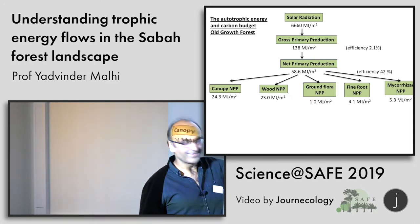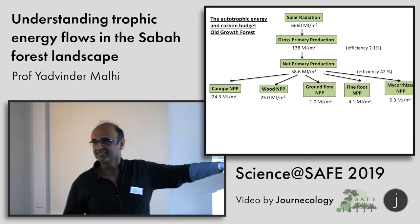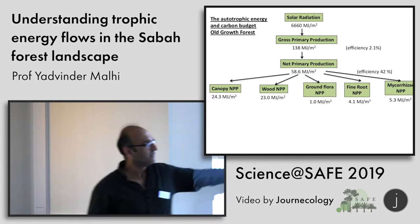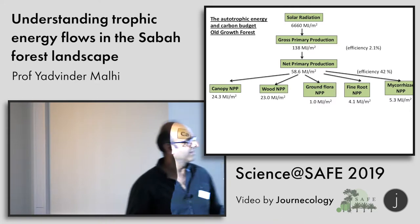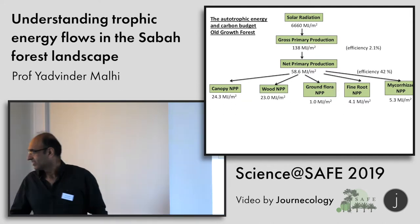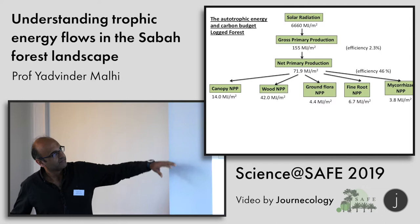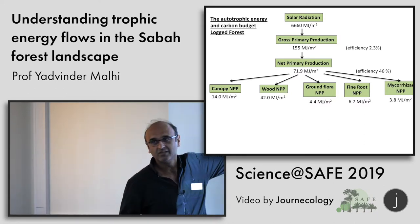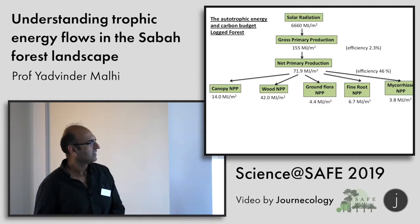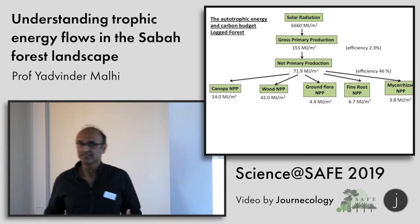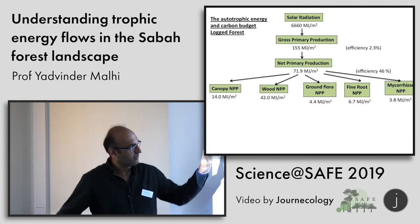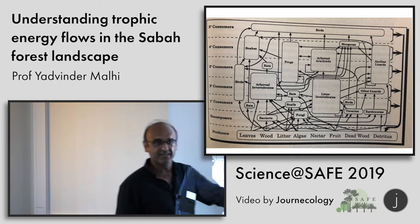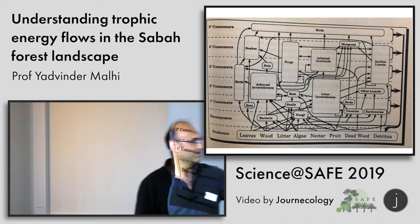We can work out how much goes into net primary production and biomass production — the efficiency we calculate is around 42%, so of all that photosynthesis, 42% ends up producing biomass. We can partition that into how much is going into the canopy — leaves, flowers, fruit — how much into the wood, and fine roots. Through experiments partitioning respiration, we can estimate how much is being allocated to mycorrhizae below ground, which is a substantial amount. We've also added a new term from our mammal herbivory data, where we estimate what the mammals are eating. So we end up with a total flow for the old growth forest, and we can do something similar for the logged forest.